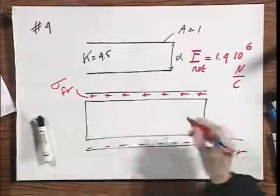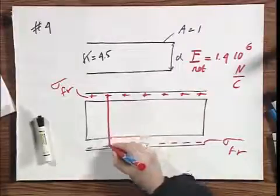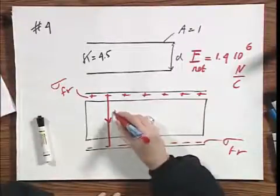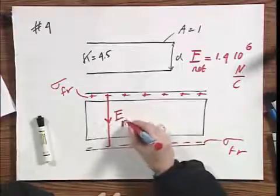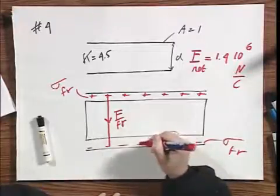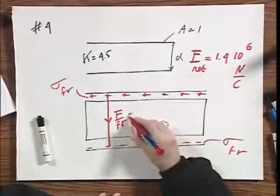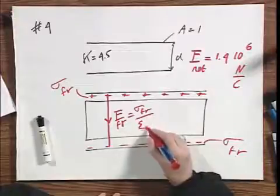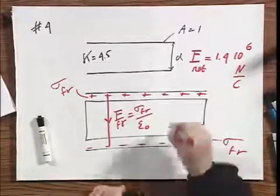And there will be an equal amount of negative charge, again sigma-free. In the absence of a dielectric, there would be an electric field. I call that the E-free. And that free field is easily calculable. That would be sigma-free divided by epsilon-zero, in the absence of this dielectric.